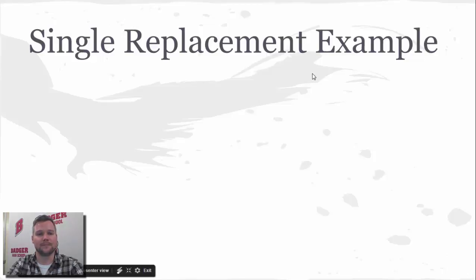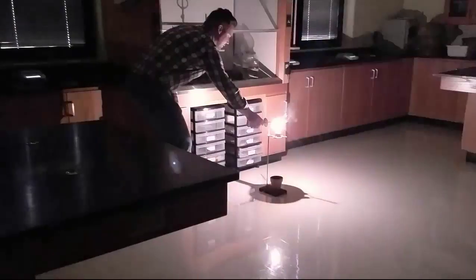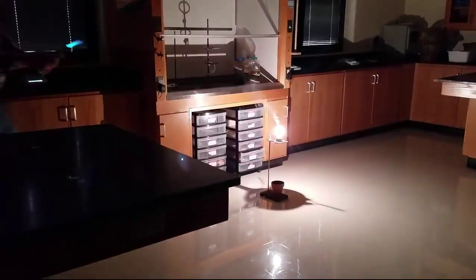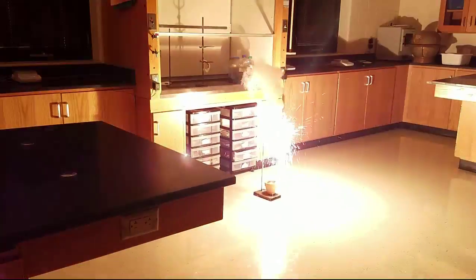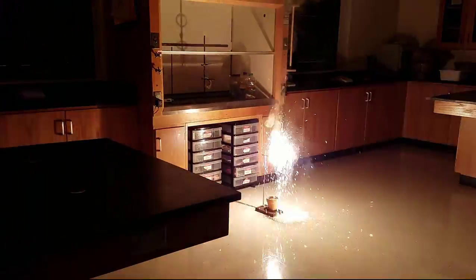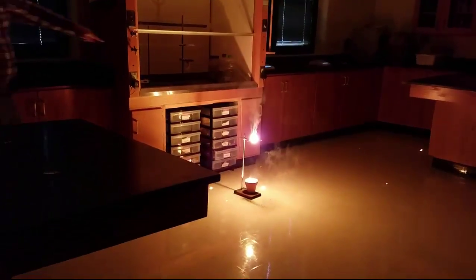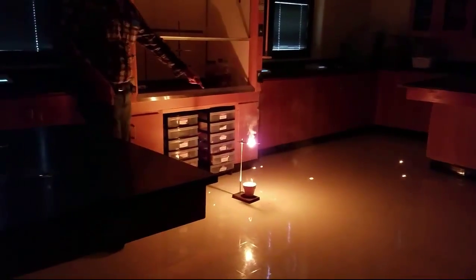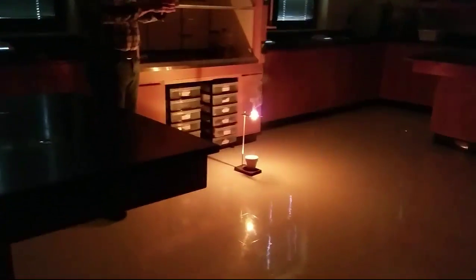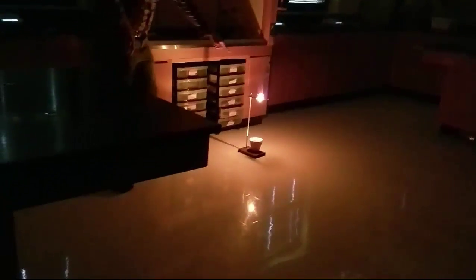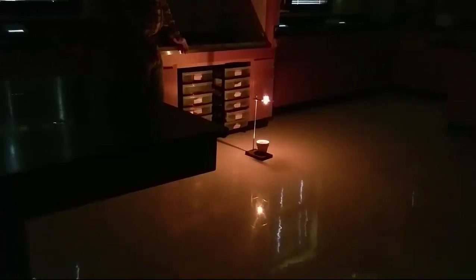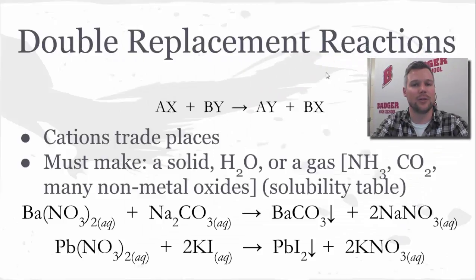The example demonstration is the thermite reaction. A piece of magnesium provides energy to get the reaction going — that's the bright white light. A shower of sparks is molten iron coming out of the bottom of the crucible. The thermite actually melted a hole right through the bottom of that metal crucible, which is why the liquid iron could pour through. A lot of energy is released during that demonstration.